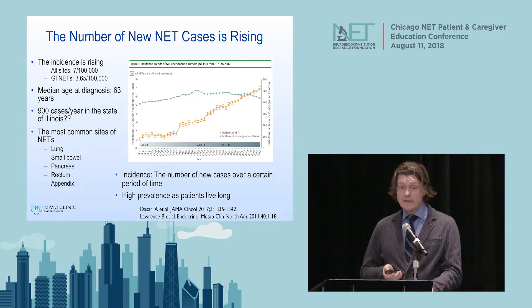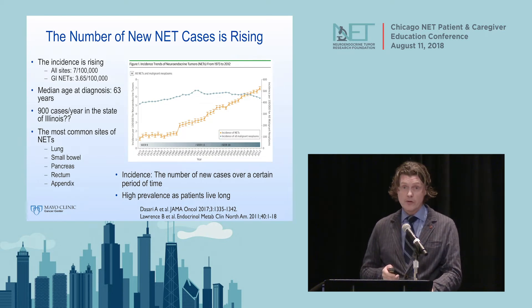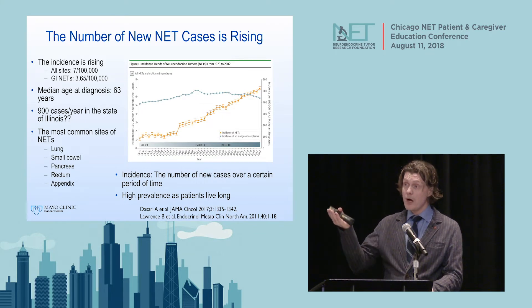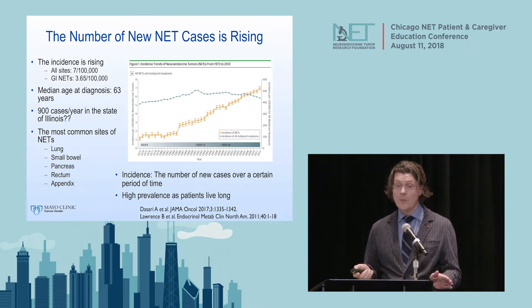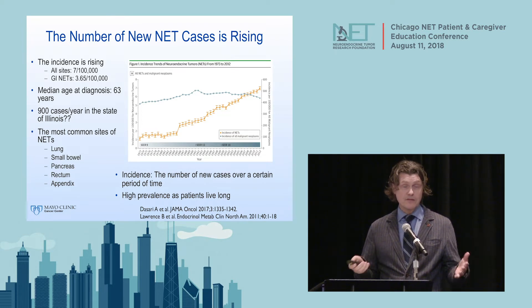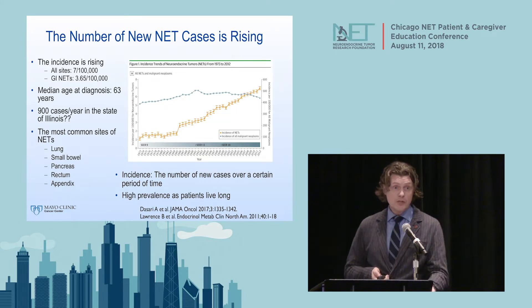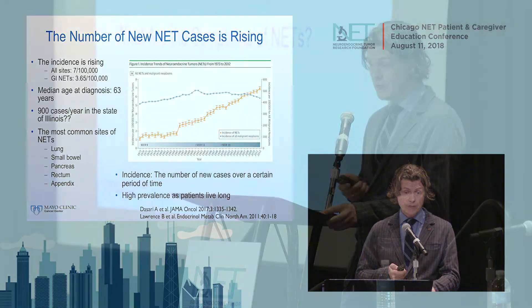The orange line shows new neuroendocrine tumor diagnoses, and that number just keeps going up—most notably in lung and pancreatic NETs. Partly this is because we are doing so many more scans than before, so a lot of these are incidental findings. For example, a patient comes in for a kidney stone scan and we find a pancreatic NET that may have been there for years and could have stayed undetected for another decade.